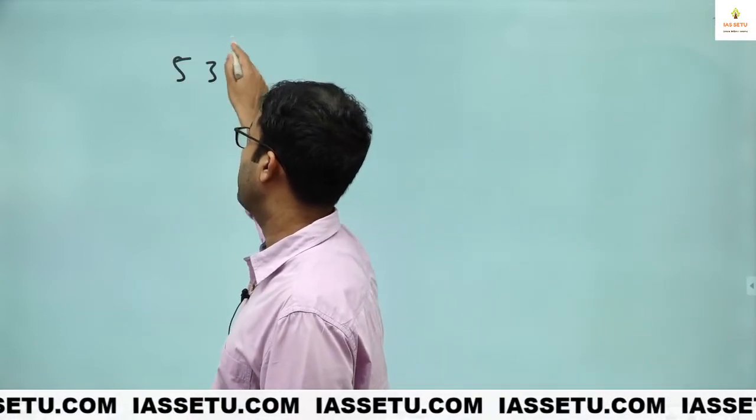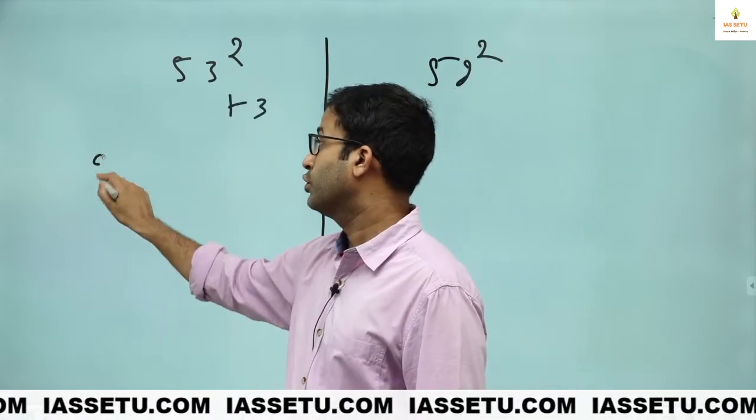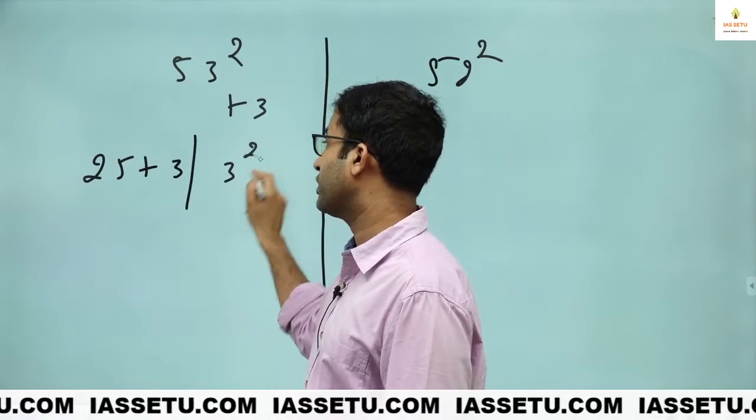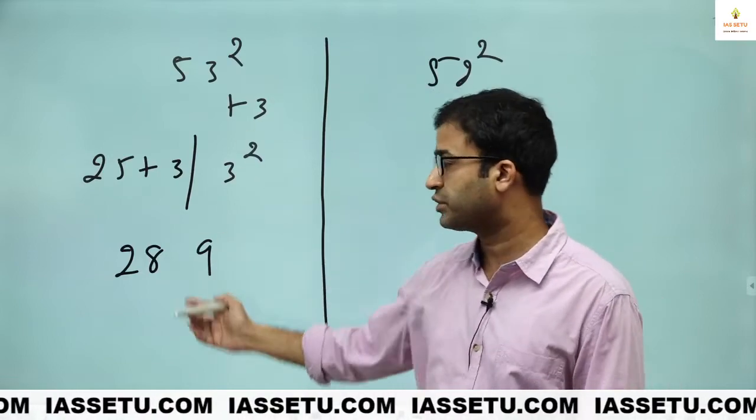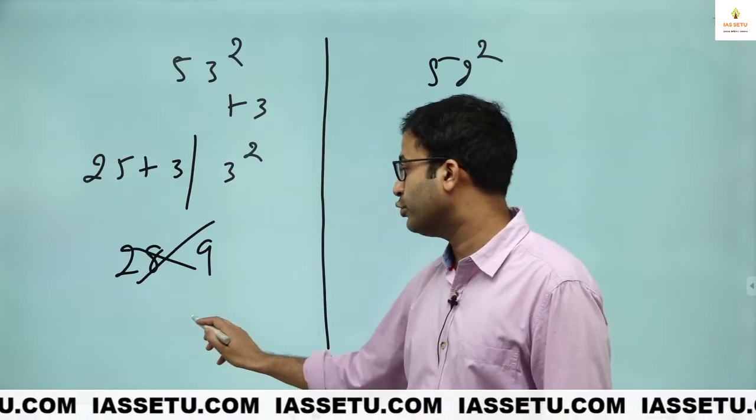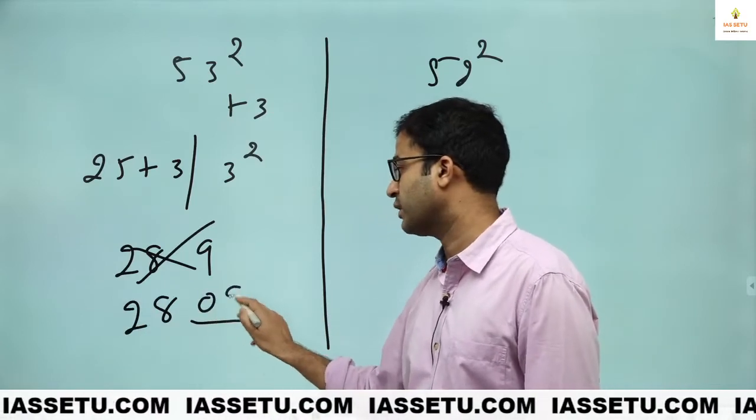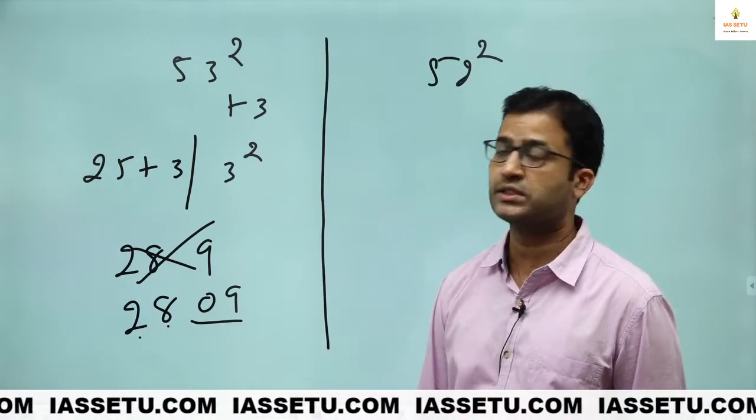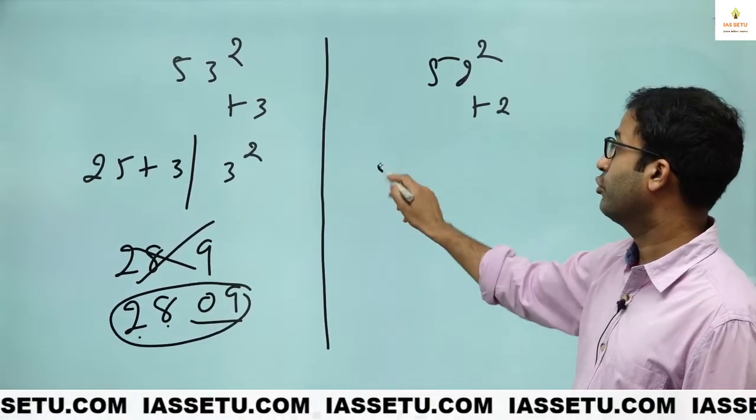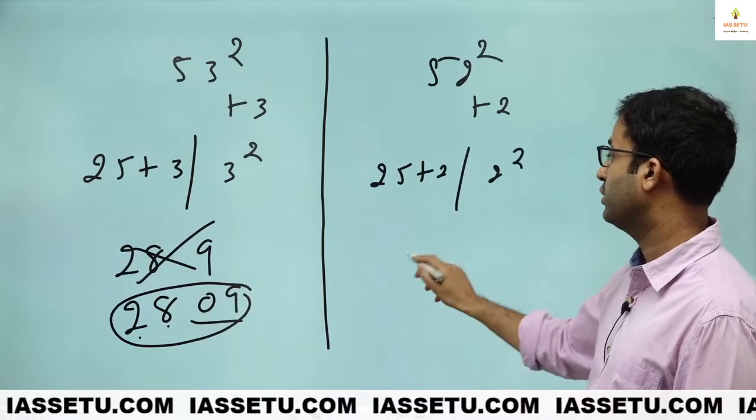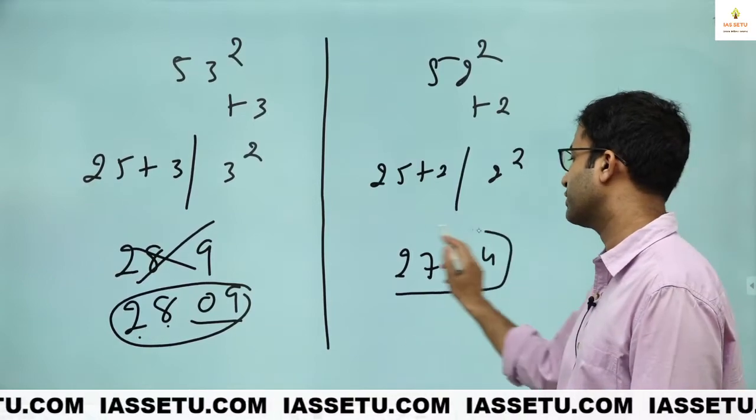Now. Last session also I told you one thing. You have to be careful. Like if we have 53 square, 52 square. This is plus 3. So 25 plus 3. This side 3 square. This is 28. Some students they write 9. How come 53 square is 289? This is wrong. I told you on the right side we have unit and 10 place. This is 28. Rather than 9 you write 09. Because this is 100 place. This is 1000 place. So don't write 9. Write 09. This is correct answer.